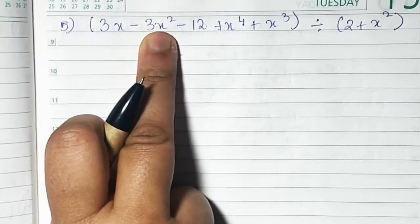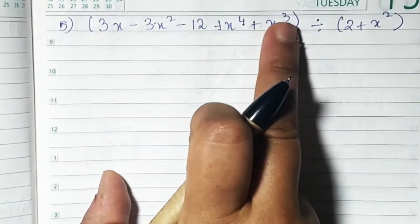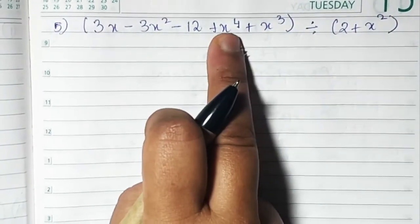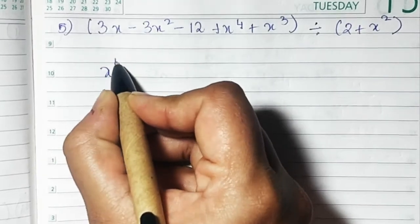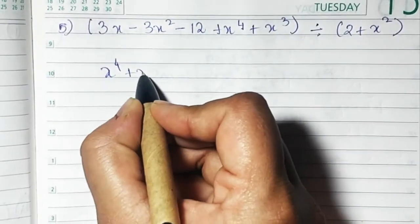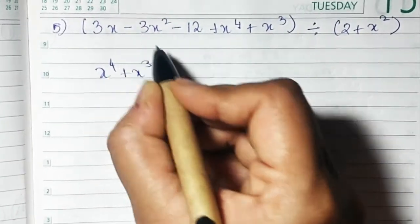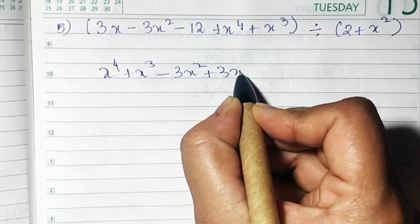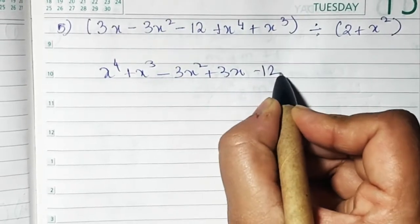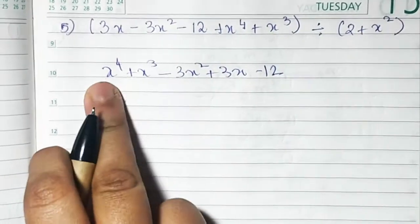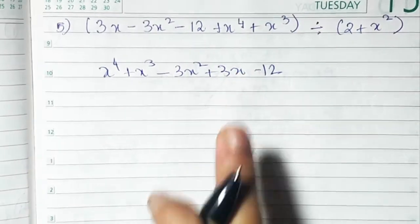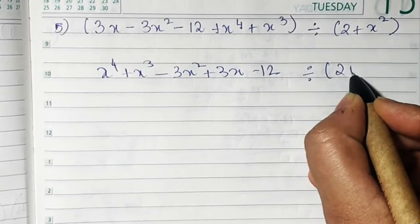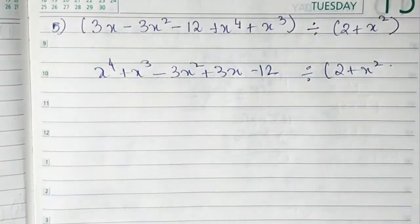Now sum number 5. This term is not arranged properly — we have a single term, then a square, then degree 4, then degree 3. So we must put it in proper order: x⁴ first, then x³, then 3x², then +3x, then -2. Now it is in proper order according to the degree of the polynomial.